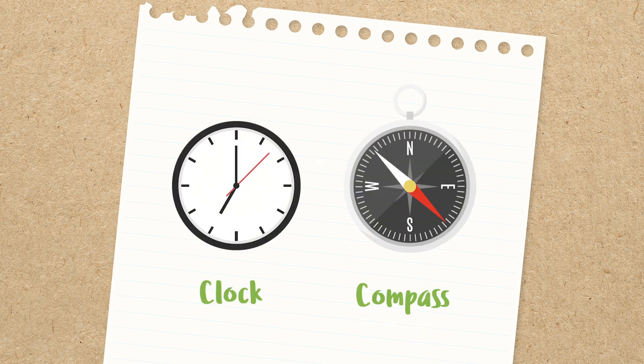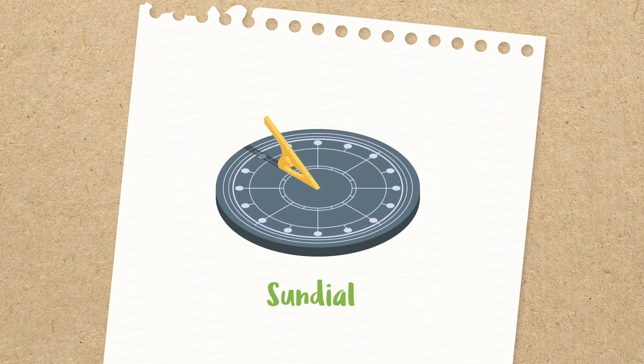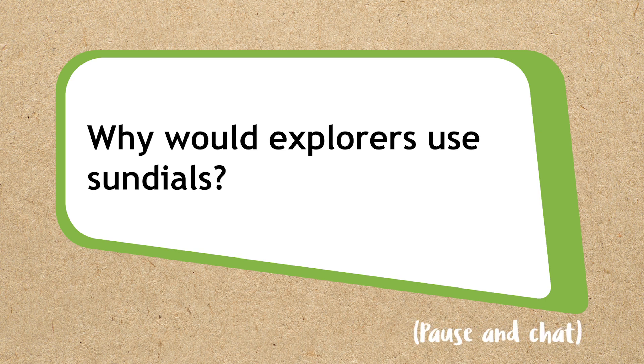Before clocks and compasses were invented, people used the light from the Sun to make a sundial so they could tell the time and know which way to go. Why do you think explorers would need to know this?